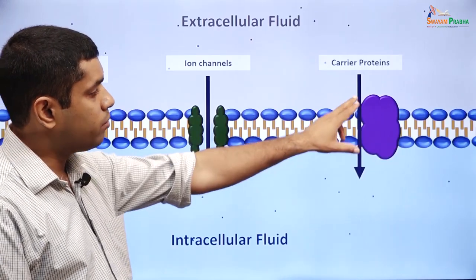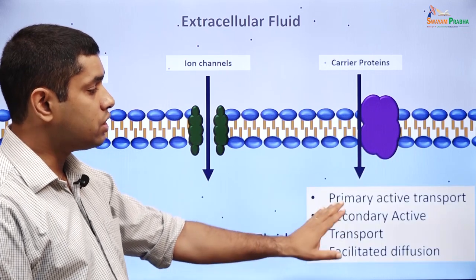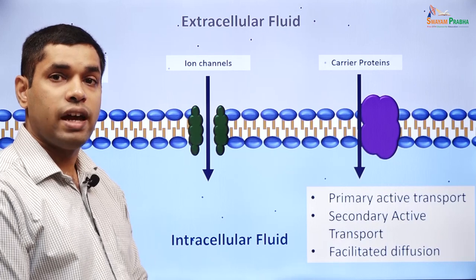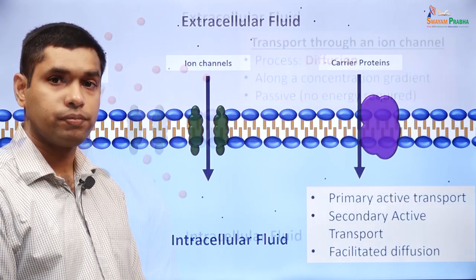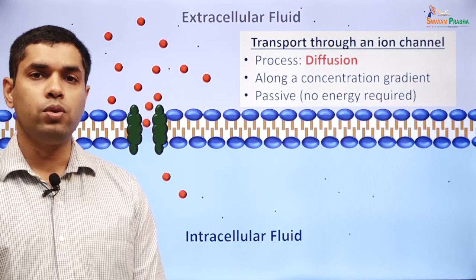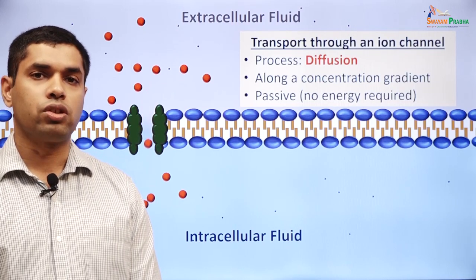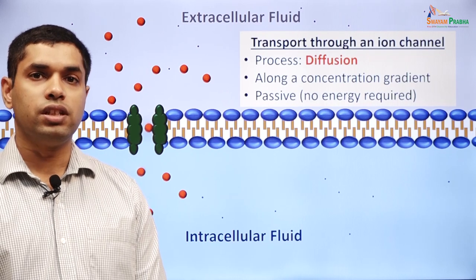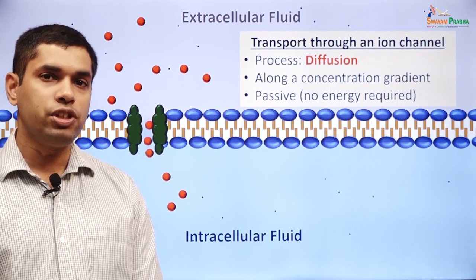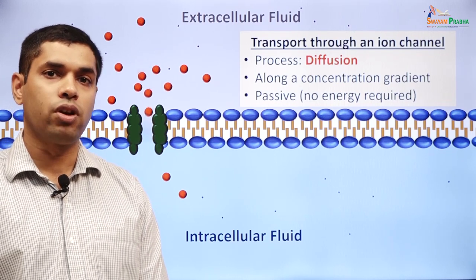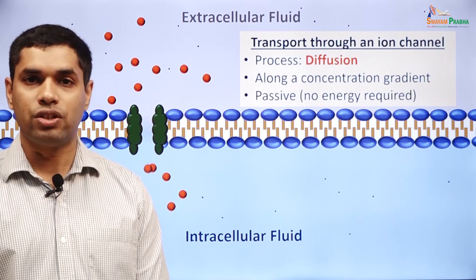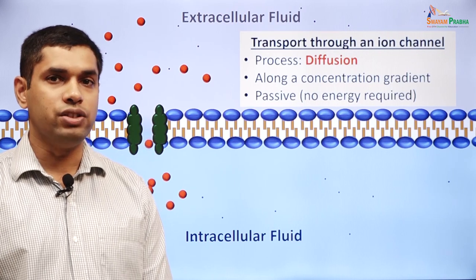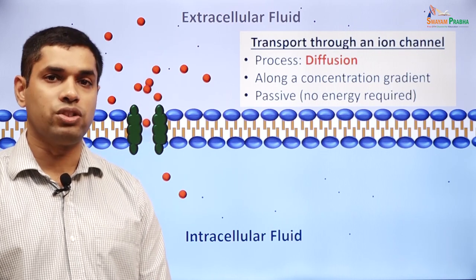So when we talk about carrier proteins, this applies to primary active transport, secondary active transport, and facilitated diffusion. It is important to remember that transport across an ion channel is simple diffusion — a substance moving from an area of higher concentration to an area of lower concentration — and it does not require energy because the energy is present in the concentration gradient.